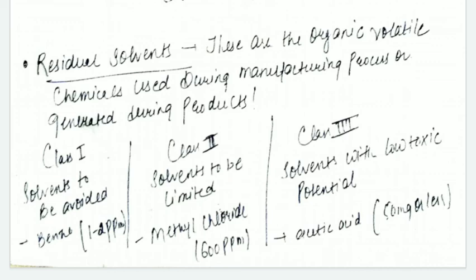In Class 1, there are solvents which we should avoid - solvents like benzene at 1 or 2 ppm. Class 2 solvents should be limited. If you've added 600 ppm, you should avoid it or limit it, otherwise it will be an impurity.